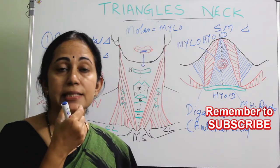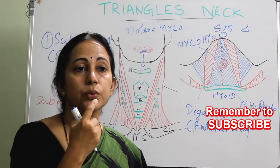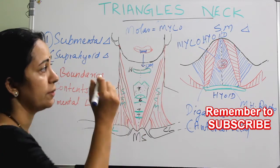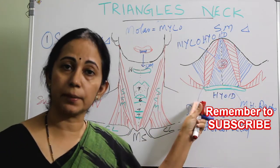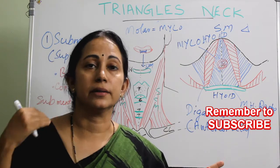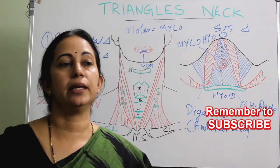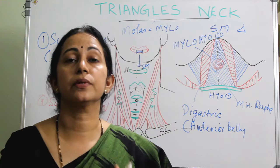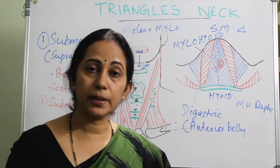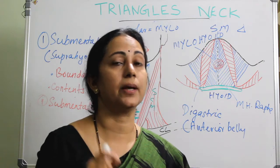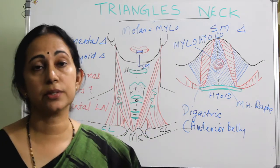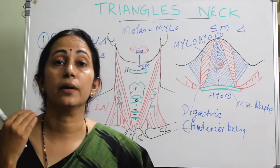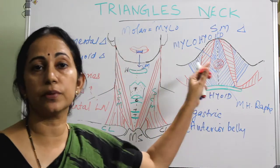From the submental lymph node, lymphatics drain into the submandibular lymph node, then to the upper deep cervical chain, and then to the internal jugular chain. The submental lymph node is not commonly affected by tubercular infection; usually infections or malignancies of these areas cause its enlargement.